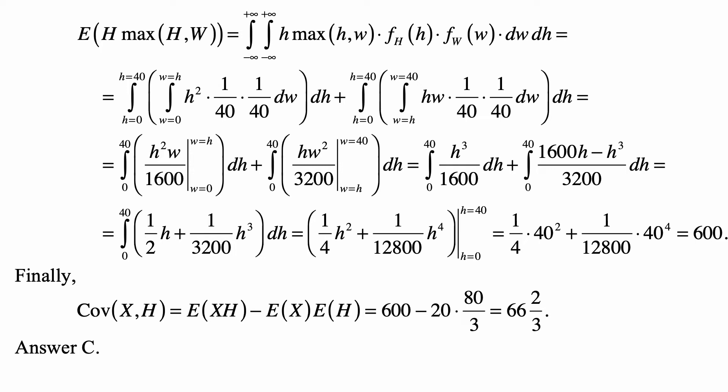And now it's a straightforward calculation. The first integral is h squared w over 1600, evaluated from 0 to h. And then we take the integral from 0 to 40 with respect to h of that, plus the integral from 0 to 40 of h w squared over 3200 from w equal to h to w equal to 40.